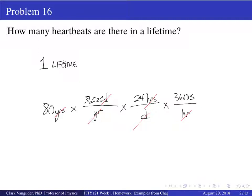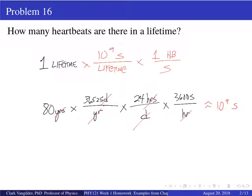So that's some number of billions of seconds. Whether it's 60 years or 100 years, we're going to have basically single-digit billions of seconds in a lifetime. We can just say 10 to the 9 seconds per lifetime. Times one heartbeat per second — the lifetime unit drops, seconds drop — and we get 10 to the 9 heartbeats.